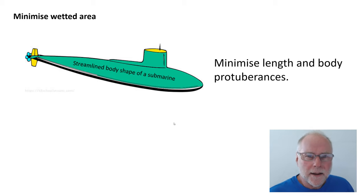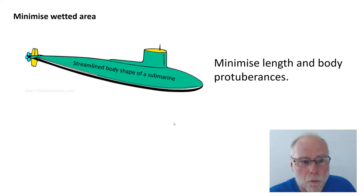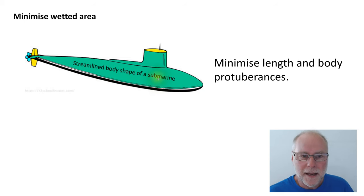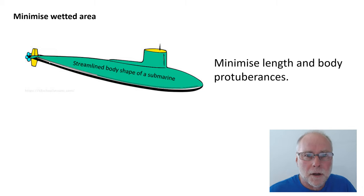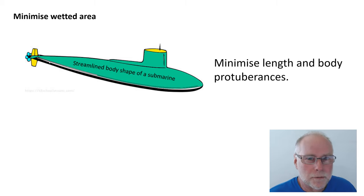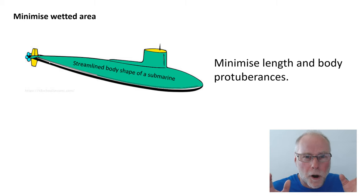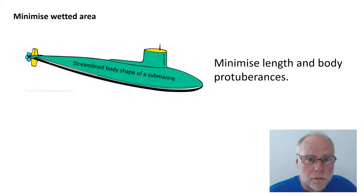Minimise wetted area. Wetted area is the area of the shape that is in contact with air — the term comes from the idea of a fluid like water and a streamlined body such as a submarine, where all of its wetted area is in contact with the fluid. We want to minimise protuberances, because those increase the wetted area. We also can't go for an infinitely long shape — the longer the tail we create, the greater the wetted area and therefore the greater the frictional drag. We don't talk much about frictional drag on normal car shapes because nearly all the drag is caused by separation and pressure drag, but on ultra-low drag shapes frictional drag becomes important. So we want to minimise wetted area while still retaining attached flow.